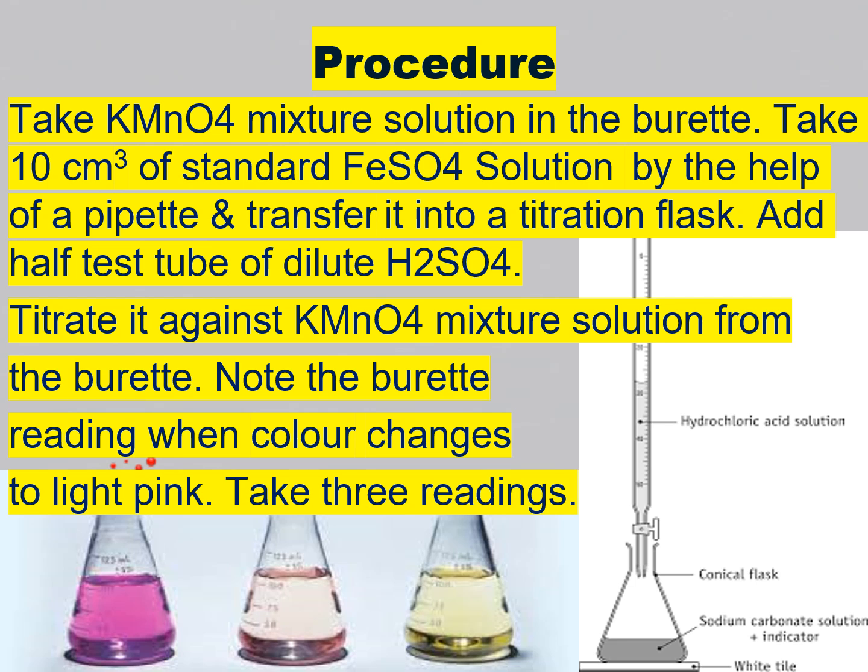The procedure of this experiment is different from acid-base titration. Here you take the KMnO4 solution in the burette, then take 10 cm³ of standard FeSO4 solution in a titration flask with the help of a pipette. Then add half a test tube of dilute sulfuric acid, and titrate against the KMnO4 solution from the burette. Note the burette reading when the color changes to light pink, and take three readings.